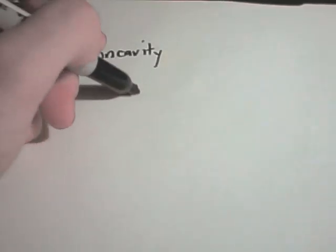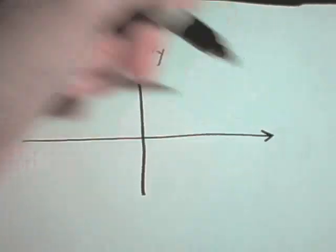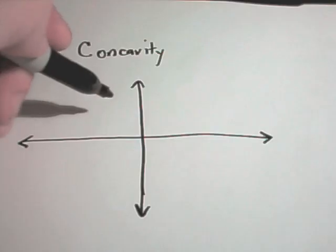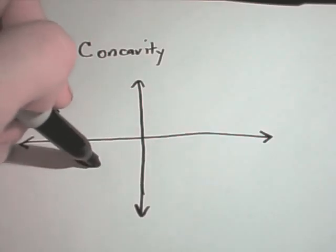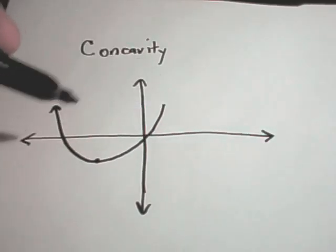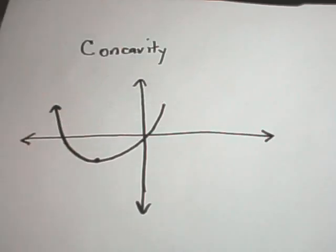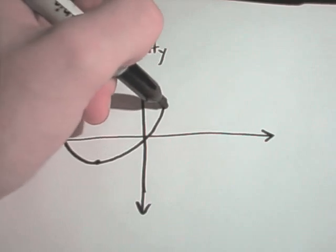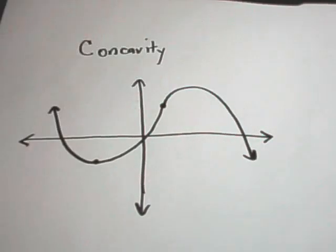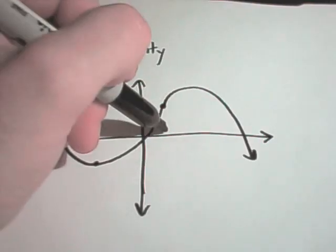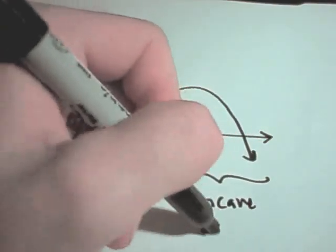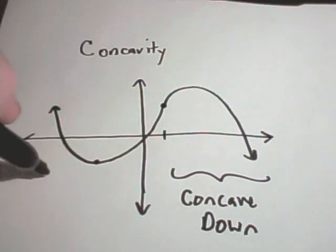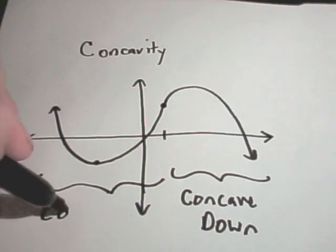In this video we're going to talk about concavity — where a graph is concave up, concave down, or neither. All concavity refers to is how a graph is basically bending. So suppose you have something that looks like a parabola pointing upwards — that portion is concave up. If you flip it so it bends downwards, that portion is concave down, and the other portion is concave up.